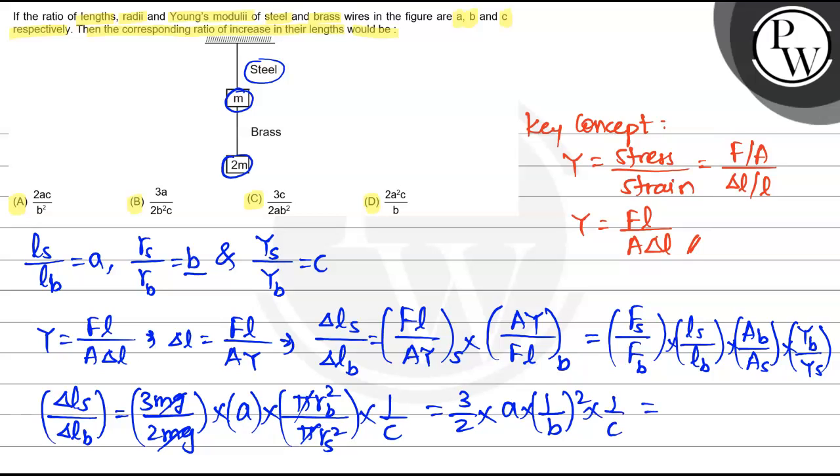So this becomes 3 by 2 into a. In the numerator, it will be 3a divided by 2 into b square into c, that is 2b square c.